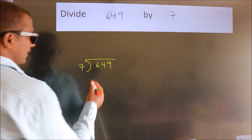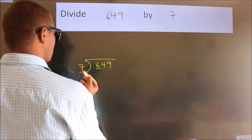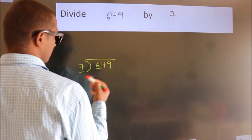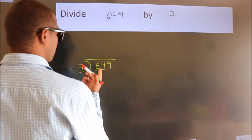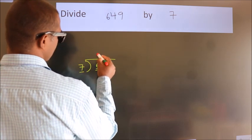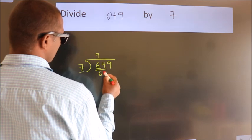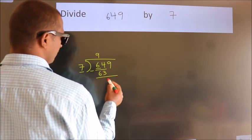Next, here we have 6, here 7. 6 is smaller than 7, so we should take two numbers, 64. A number close to 64 in 7 table is 7 nines, 63. Now we should subtract. We get 1.